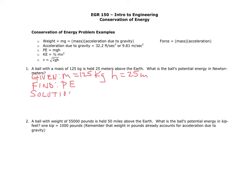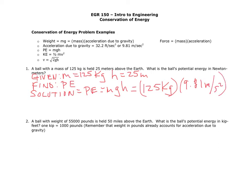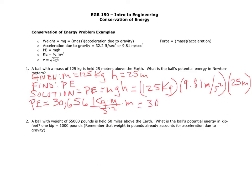Our solution uses the formula: potential energy equals mass times gravity times height. So it's going to equal 125 kilograms times 9.81 meters per second squared times the height of 25 meters. When we multiply that out, we get 30,656 kilogram meters per second squared times a meter. Since a kilogram meter per second squared is a newton, that gives us 30,656 newton meters.